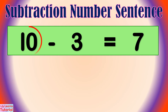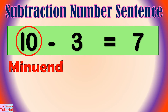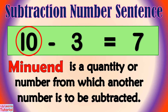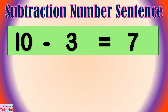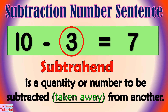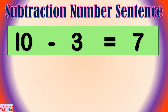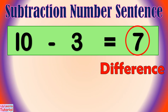The minuend is a quantity or number from which another number is to be subtracted. The subtrahend is the quantity or number to be subtracted, taken away from another. The answer in subtraction is called the difference.